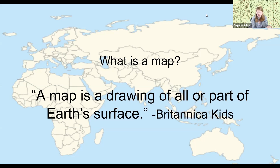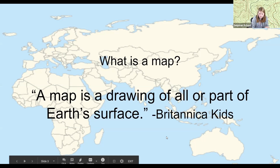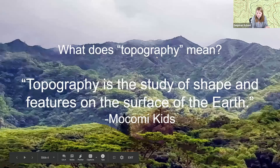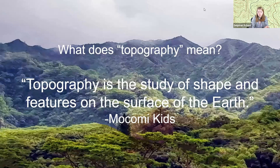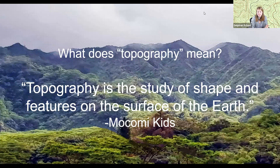One of the things that's really hard to see on a flat image is height — it's really hard to tell how high up a mountain is or how low a valley is because of the fact that it's flat. We're going to be talking about a kind of map called topographic maps. Topography is the study of the shapes and features on the surface of the earth — that includes anything from rivers to mountains to things that people have put there.